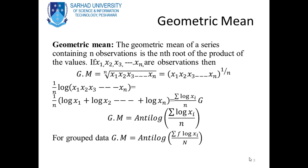Geometric mean: the geometric mean of a series containing n observations is the n-th root of the product of the values. If x1, x2, x3 up to xn are observations, then geometric mean is equal to (x1 · x2 · x3 · ... · xn) raised to the power 1 over n.